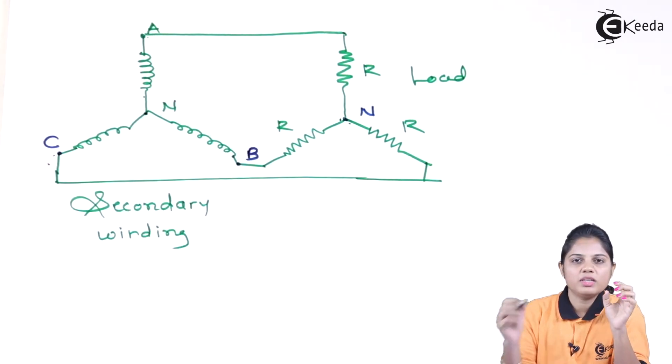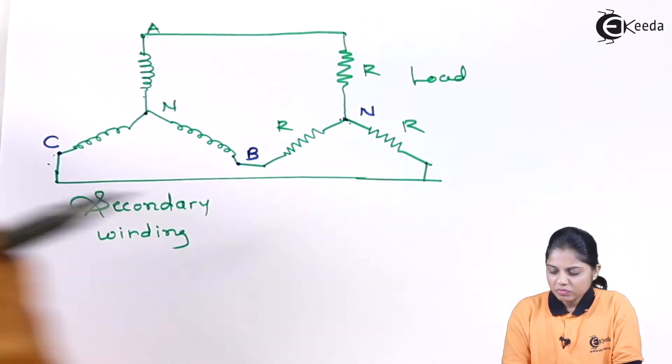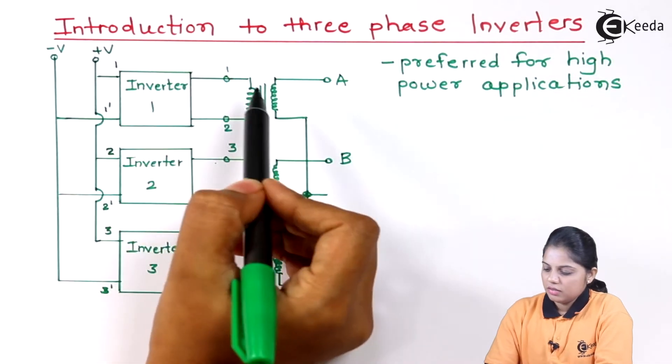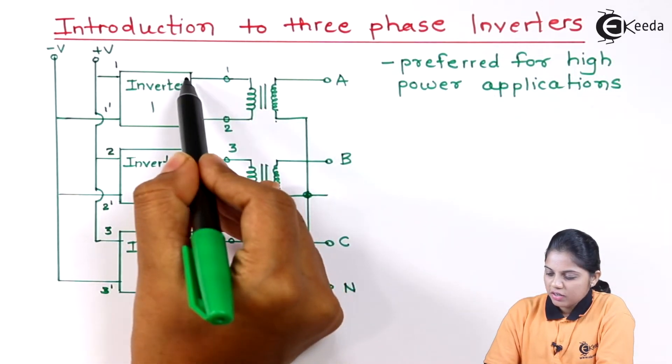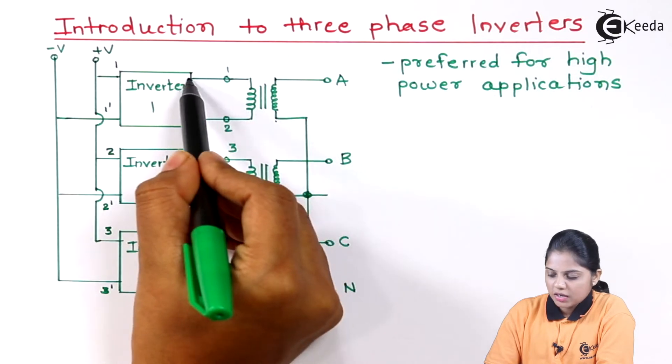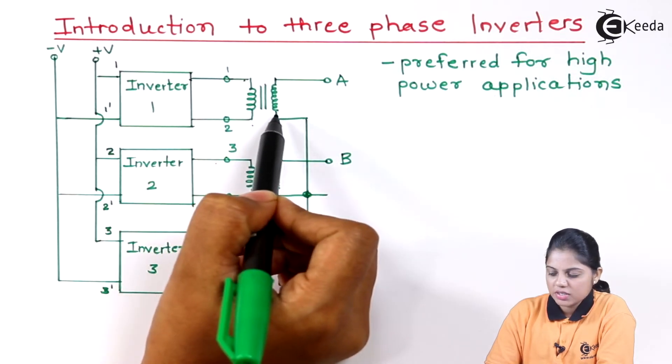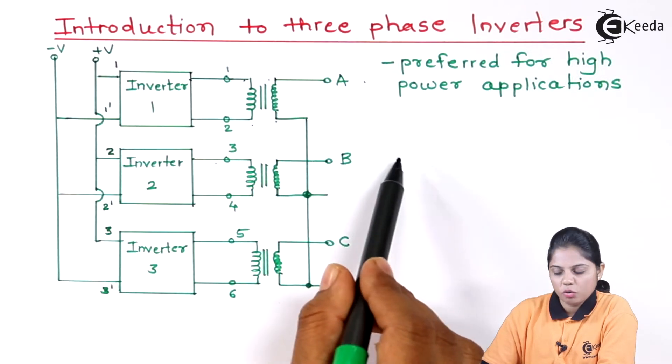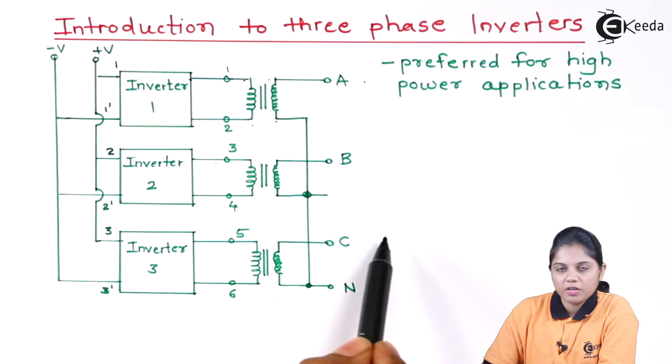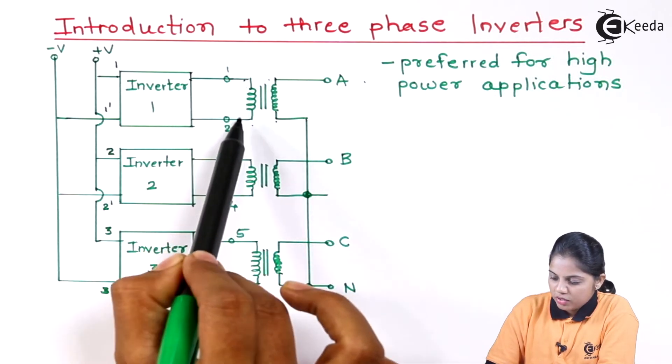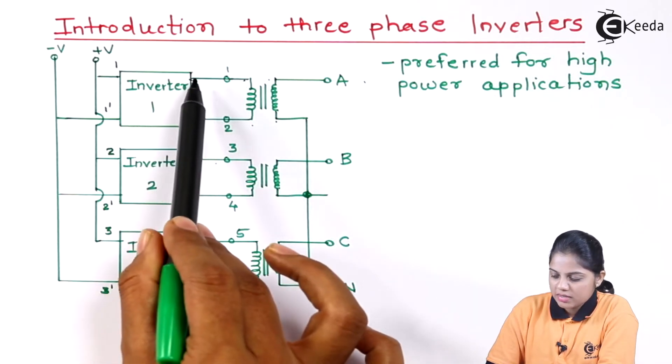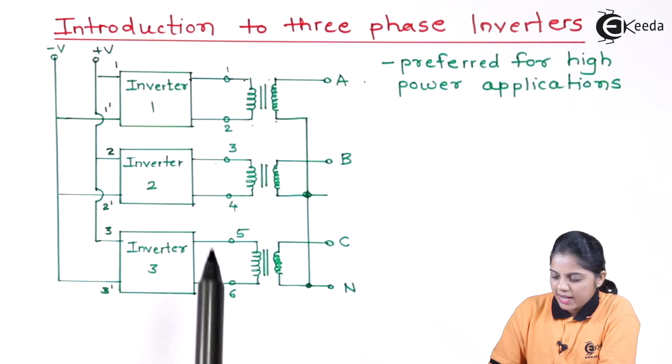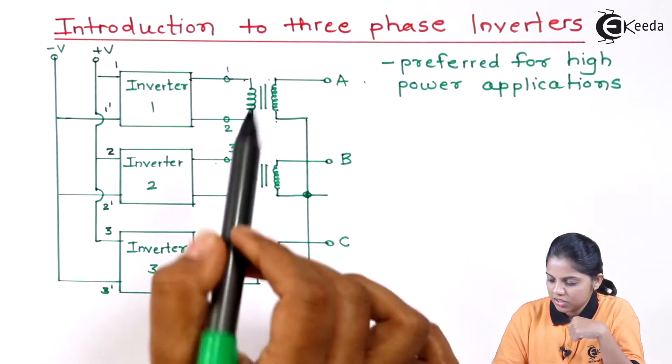The point A, B, C is nothing but these are the output of the secondary winding which are taken out from this particular secondary winding. This is the output of the inverter which is connected to the secondary winding. So this is connected to load 1, this is connected to different load 2, and this is connected to different load C. Whereas this input is isolated. You can see the input of the inverter or the primary windings of the inverters are isolated from each other. They are not connected with each other.